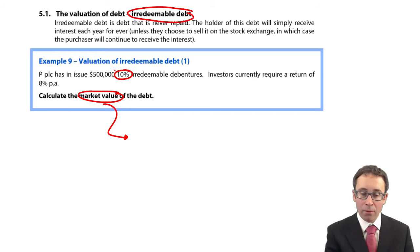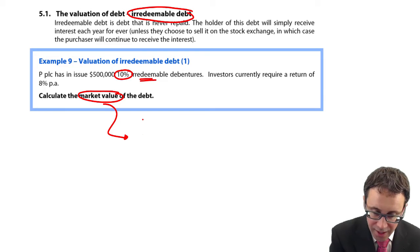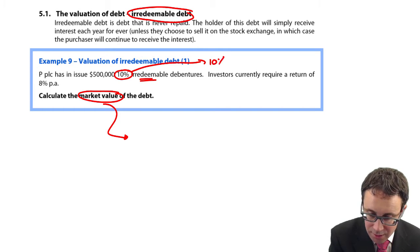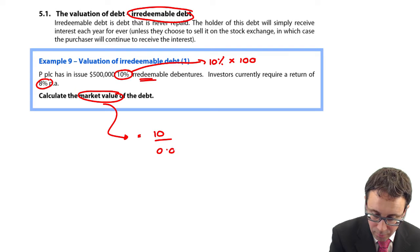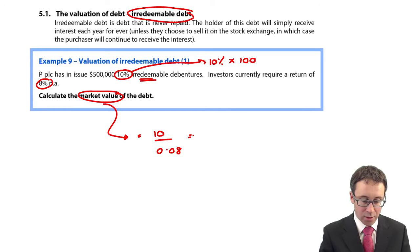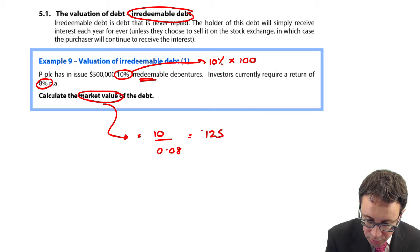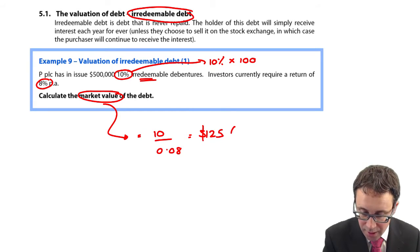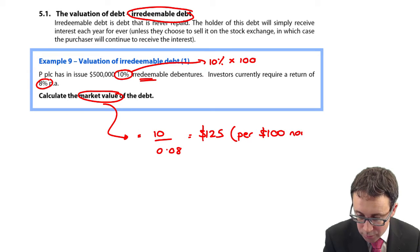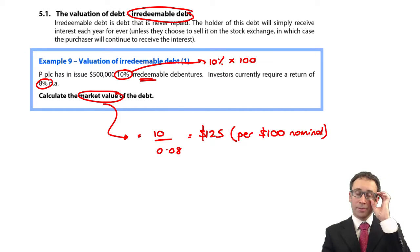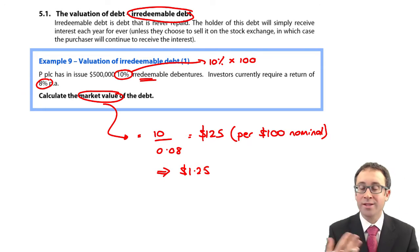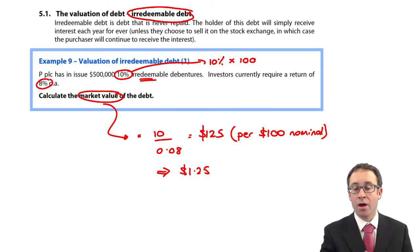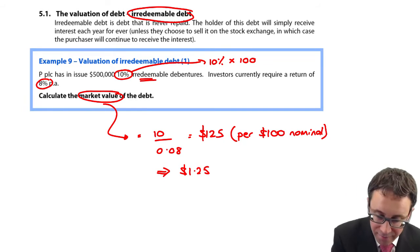To work out your market value, here you have 10% irredeemable debentures. So that coupon rate of interest is 10% of your 100. That's 10, and then you multiply that by 1 over the discount rate of 8%. So 10 divided by 0.08 gives you $125 per block of 100. Per $100 nominal value, it is $1.25 per bond.